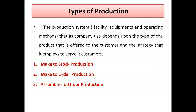That concludes our review of the last lecture. Now, regarding types of production: a production system consists of facilities, equipment, and operating measures. The system a company uses depends on the type of product offered to the customer and the strategy employed to serve it. There are three types of production systems: Make to Stock, Make to Order, and Assemble to Order. We will discuss each with examples, advantages, disadvantages, and characteristics.